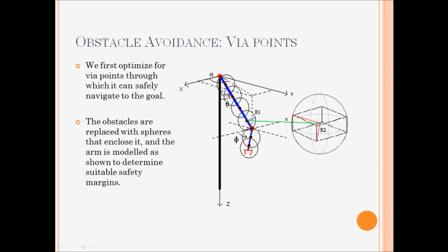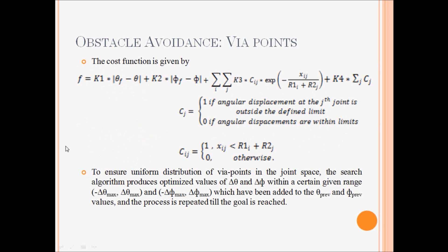And we avoid obstacles based on this model of the arm. The arm has sensors around its length, as shown here by the red dots. And this can sense obstacles at a range R1. But the obstacles are modeled by spheres which has a radius R2. So we are trying to keep a distance of R1 plus R2 from the arm to the obstacle center.